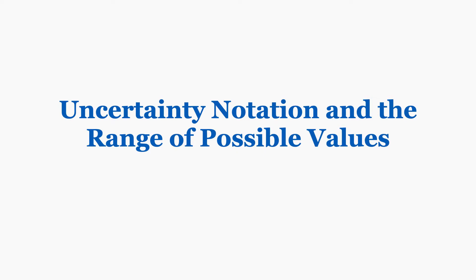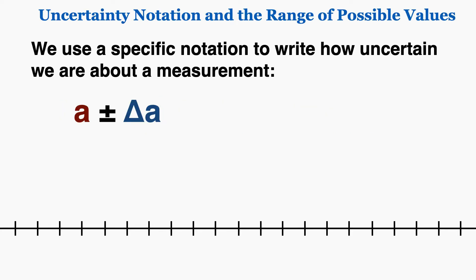In this first lecture on uncertainty, I'm going to introduce the notation that we use and why the notation represents a range of possible values. We use a specific notation to write how uncertain we are about a measurement. Here I have it written A plus or minus delta A, but it can be any letter — it could be B, C, or D plus or minus delta B, C, or D. These symbols have specific meanings.